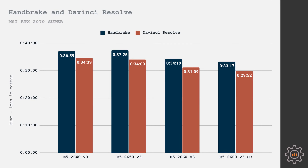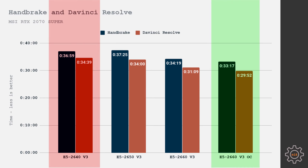Now let's move to real tasks: Handbrake video encoding and DaVinci Resolve video rendering. I rendered one of my YouTube videos in 4K using DaVinci Resolve, then encoded it to 1440p using Handbrake. The 2640 and 2650 show very similar results — 37 minutes for Handbrake and 34 minutes for DaVinci Resolve, with the 2640 slightly faster in Handbrake and slightly slower in DaVinci Resolve. The 2660 reduced times to 34 minutes in Handbrake and 31 minutes in DaVinci Resolve. With overclocking, times dropped further to 33 and 29 minutes respectively. Overall, the difference between 2640 and overclocked 2660 is about 5–10%.